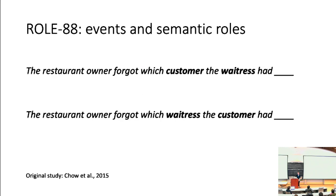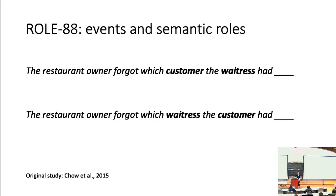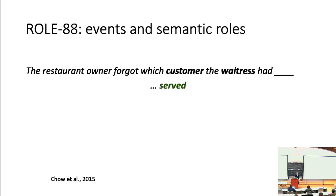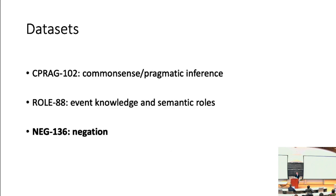The NEG-136 dataset — my favorite because it yields the clearest takeaways — comes from Fischler et al. (1983). We have sentences like 'A robin is a,' where 'bird' is a good continuation. If we add negation — 'A robin is not a' — 'bird' is no longer a good continuation; something like 'tree' would be true. But Fischler et al. find that the N400 shows a similar level of preference for 'bird' in both cases over 'tree.' For prediction accuracy, we only test the affirmative context since the negated context is too high-entropy. Accurate predictions in affirmative contexts rely on accessing hypernym information. For the sensitivity test: can BERT prefer true continuations over false ones, with sensitivity to how negation affects which things are true and false?